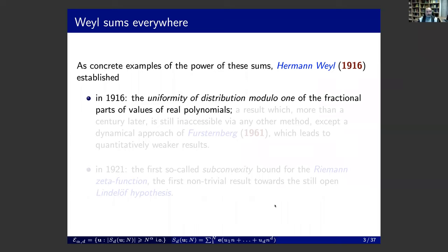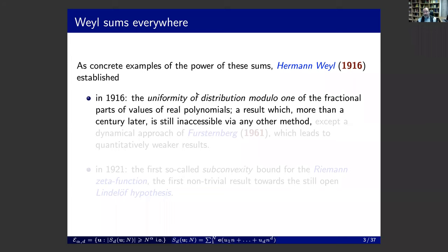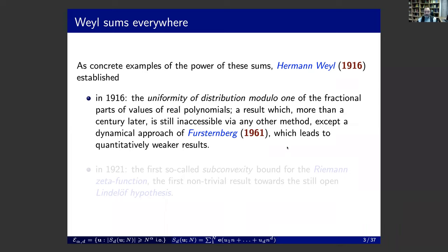When Hermann Weyl introduced the sums, he almost immediately found two very important applications — that was actually the motivation to introduce the sums. In 1916, he proved these sums can be used to show uniformity of distribution results for fractional parts of values of real polynomials. Even now, 100 years later, we don't really know how to deal with this otherwise, except for Furstenberg's dynamical approach, which however gives quantitatively weaker results.